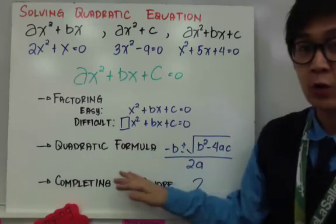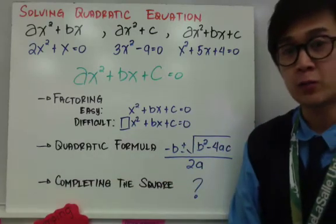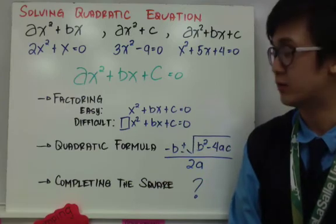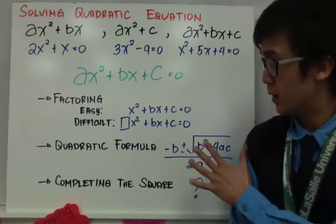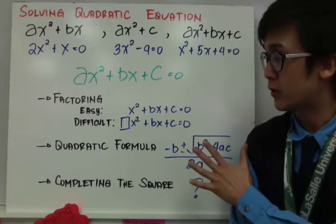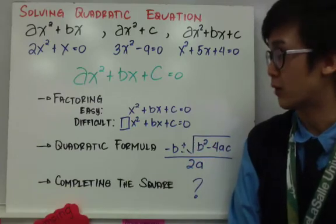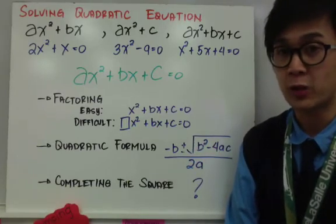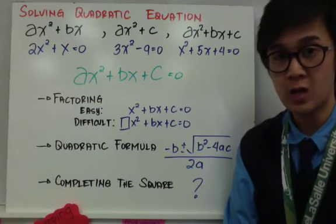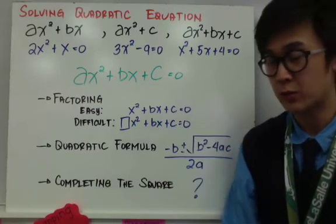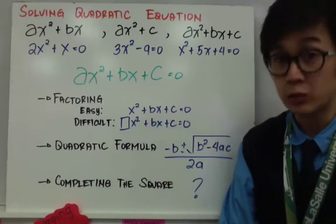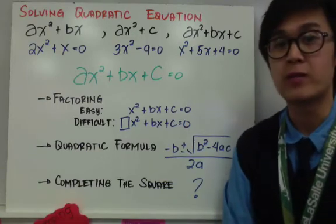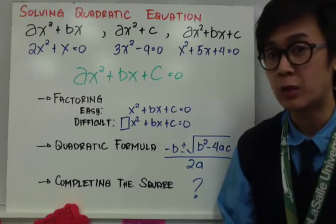For the quadratic formula, you need to memorize it prior to using it to solve for x. The formula is negative b plus or minus the square root of b squared minus 4ac, all over 2a. And lastly is the completing the square method, which we're going to be working on today.